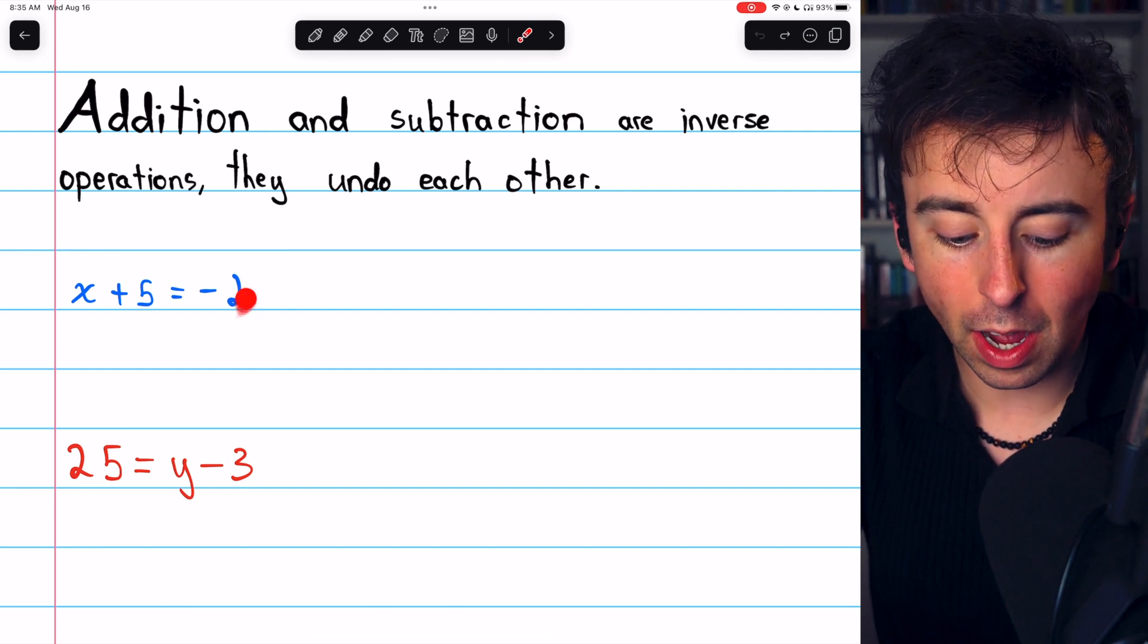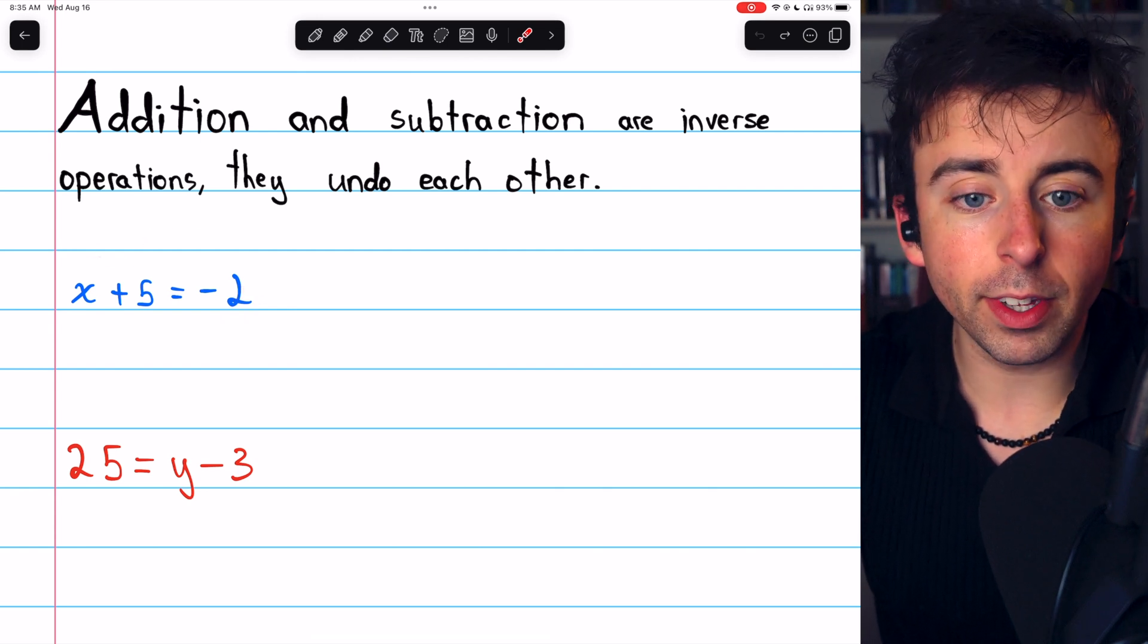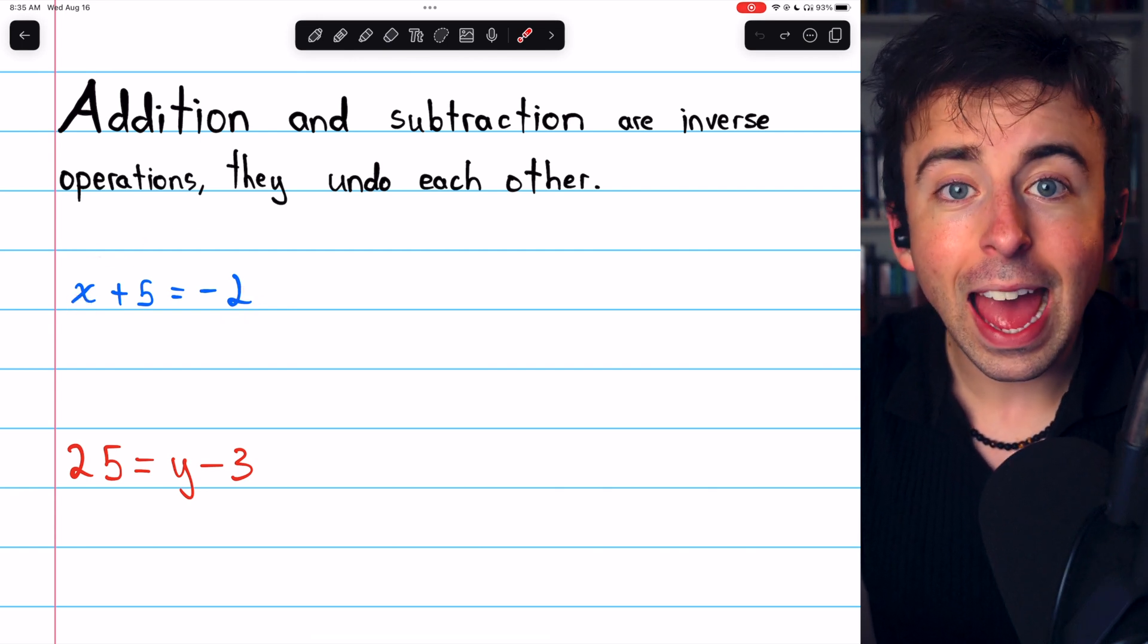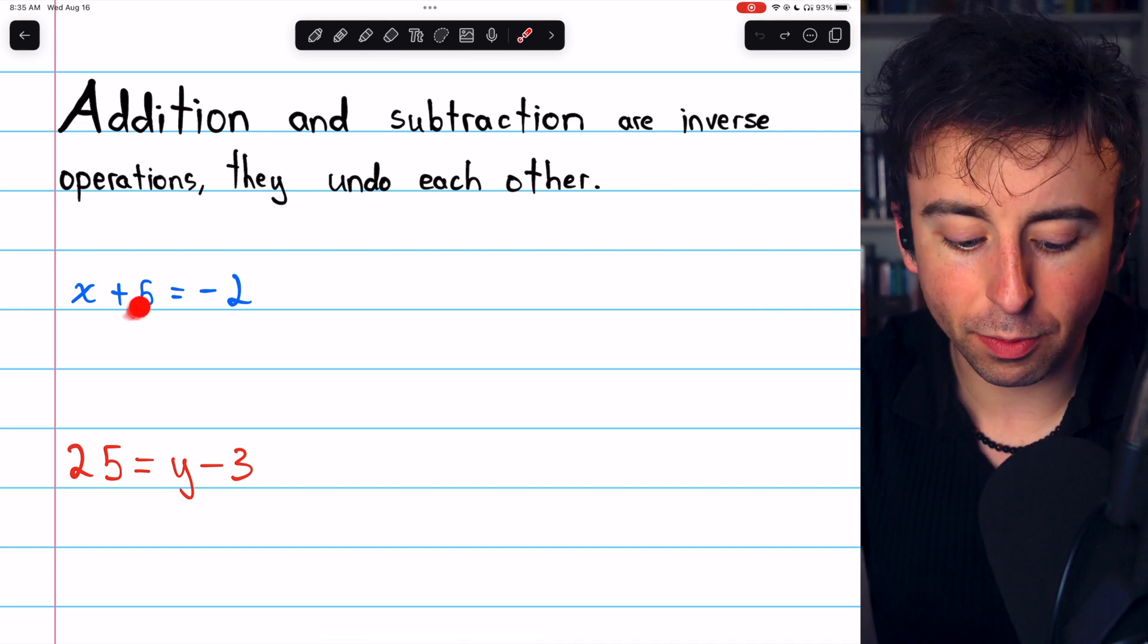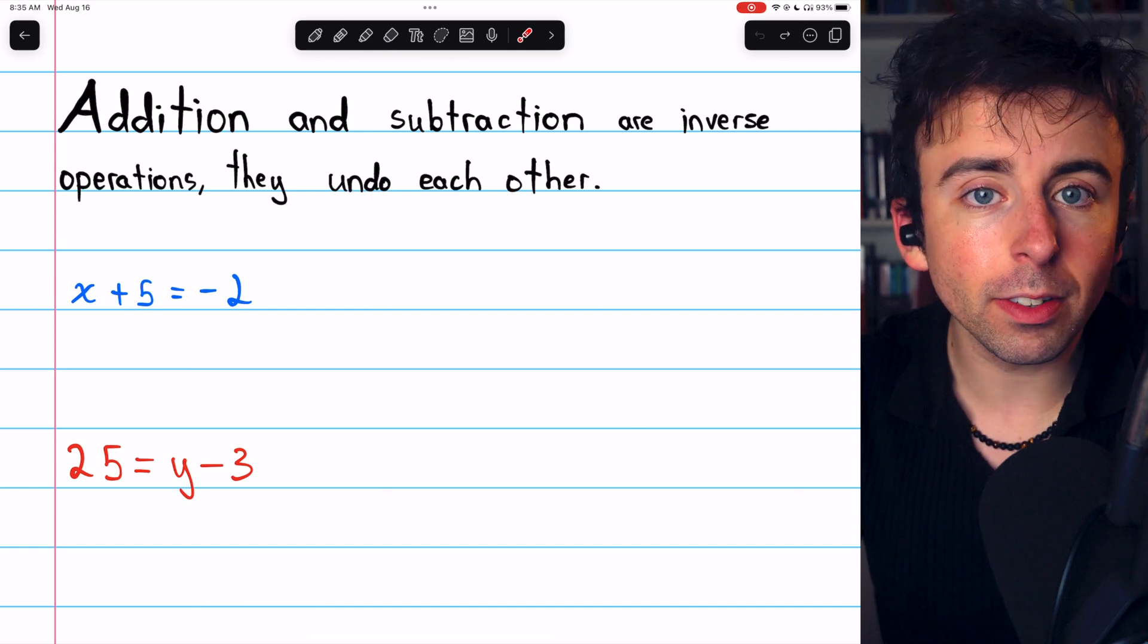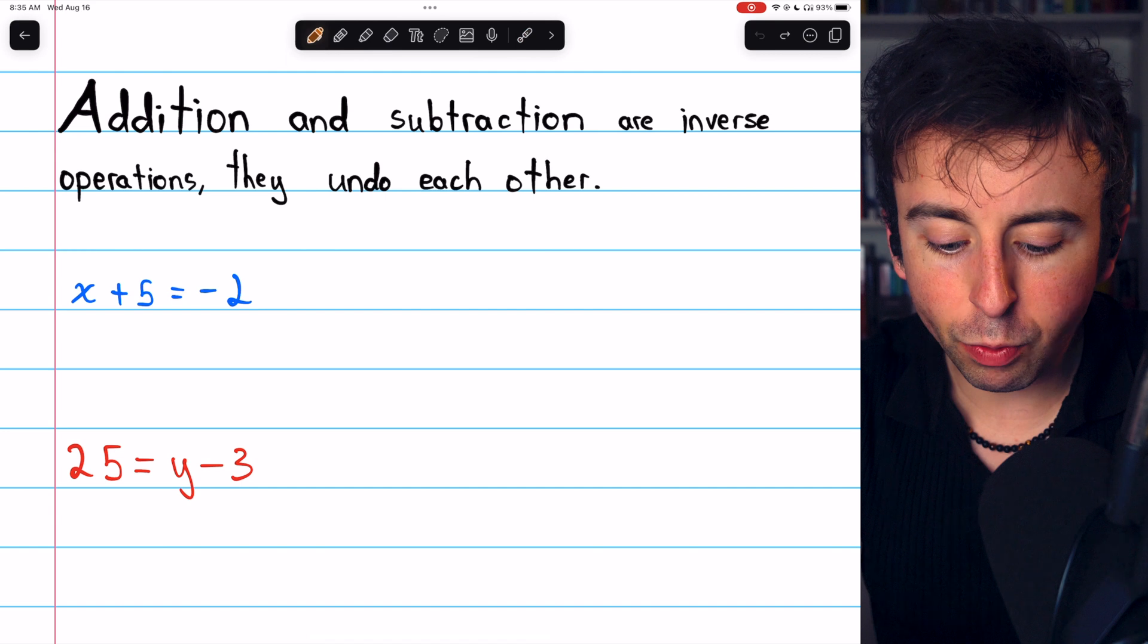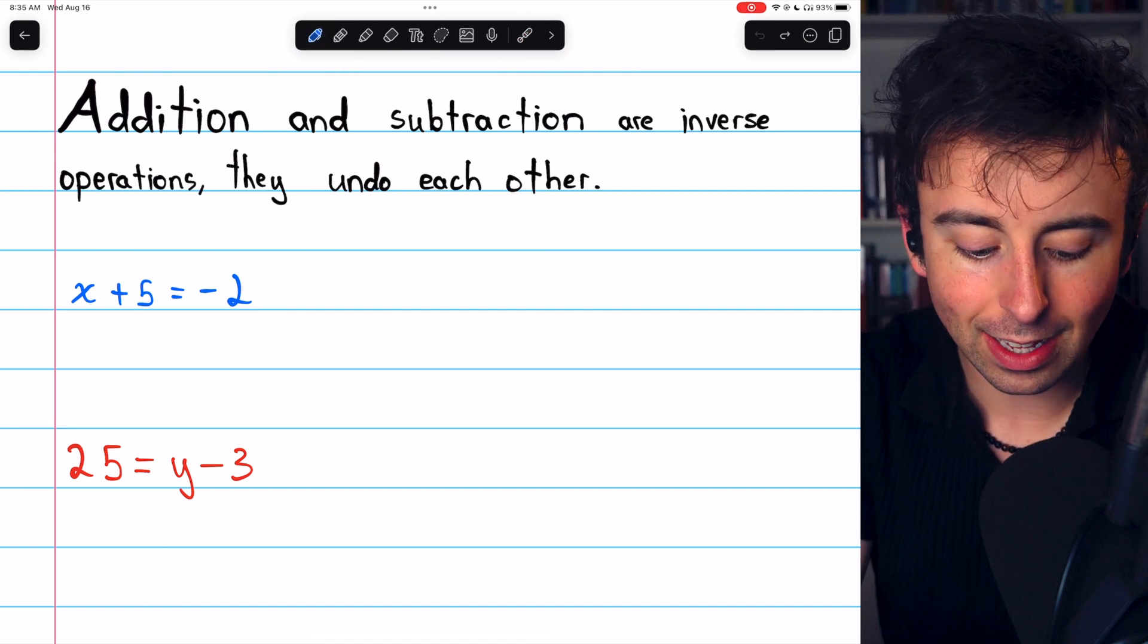if we have x plus 5 equals negative 2, we want to solve this equation for x. x is not by itself because 5 is being added to it, but subtraction is the inverse of addition, so we can get rid of this plus 5 if we simply subtract 5 from both sides.